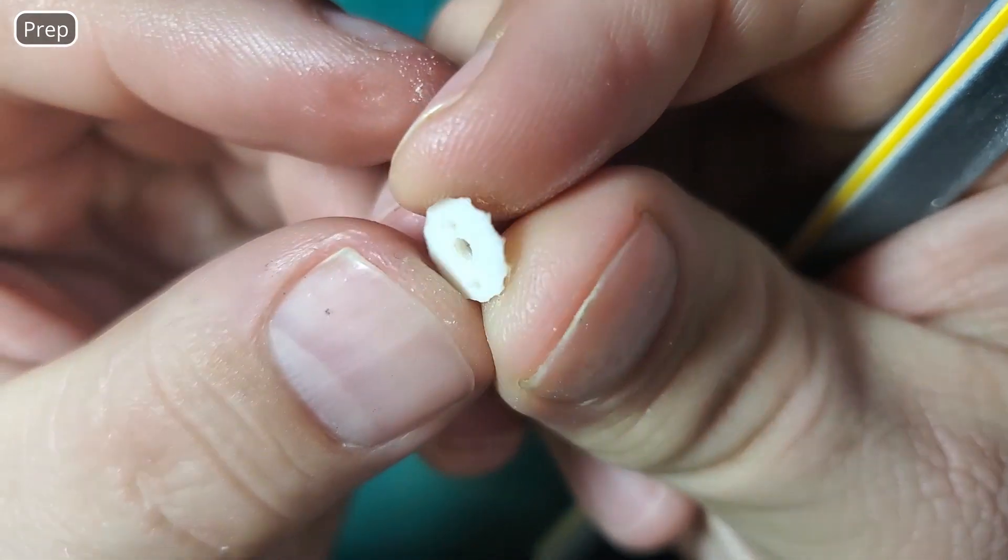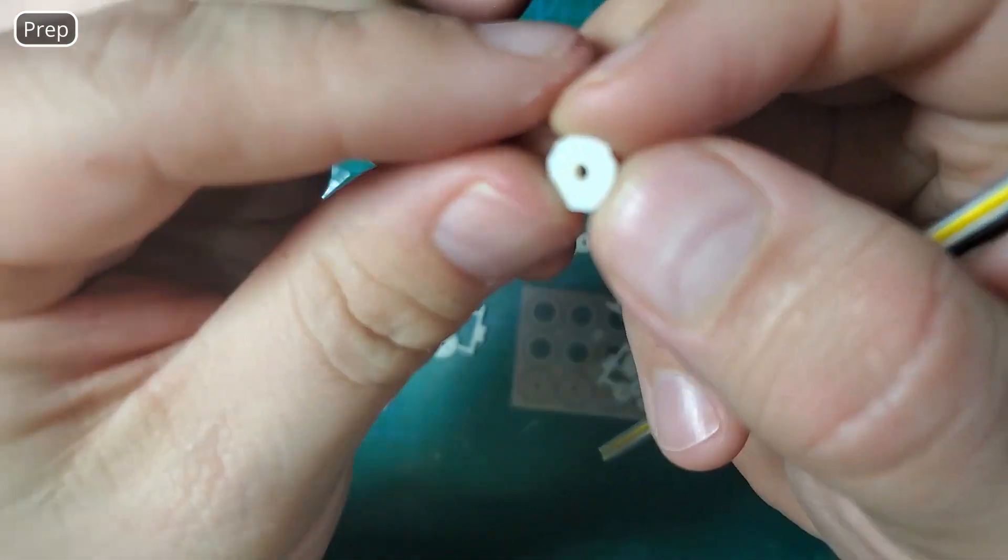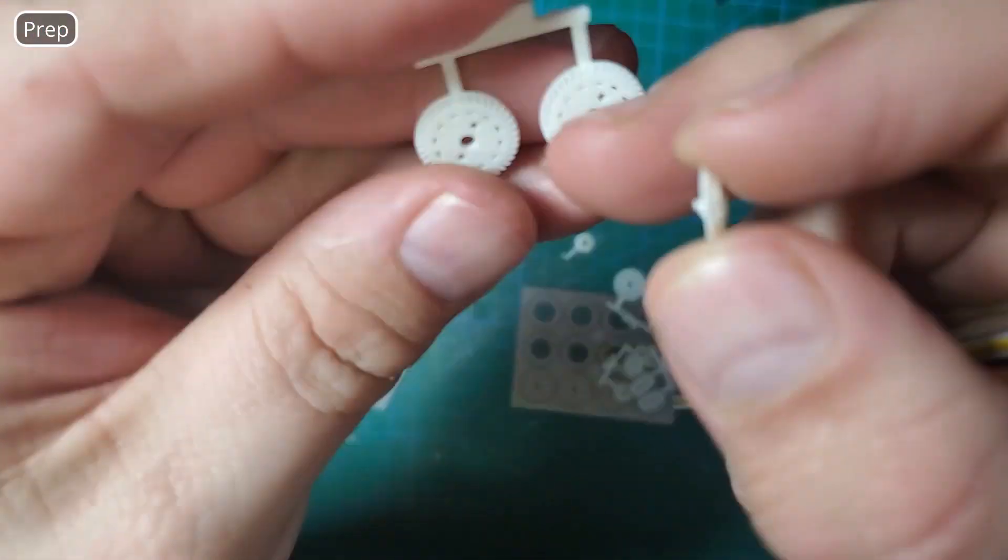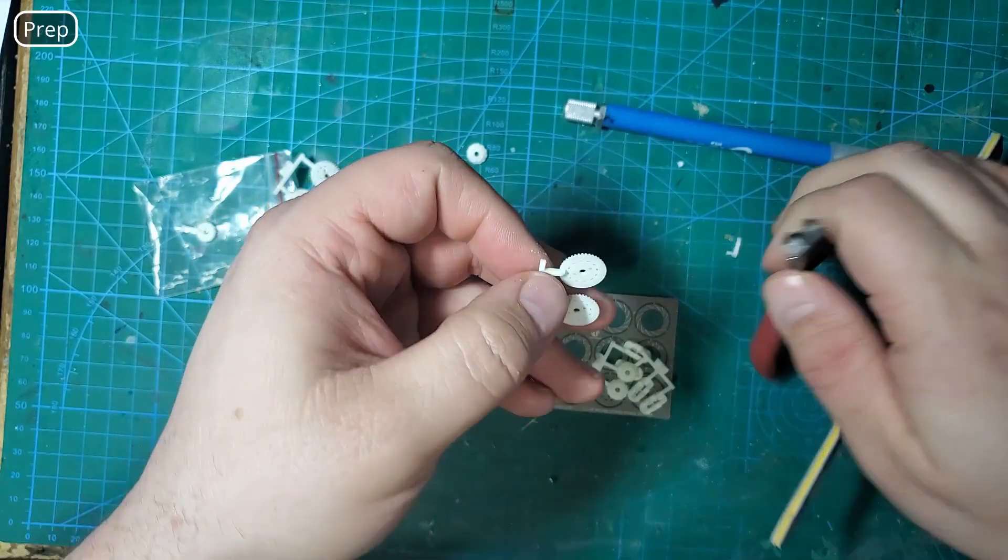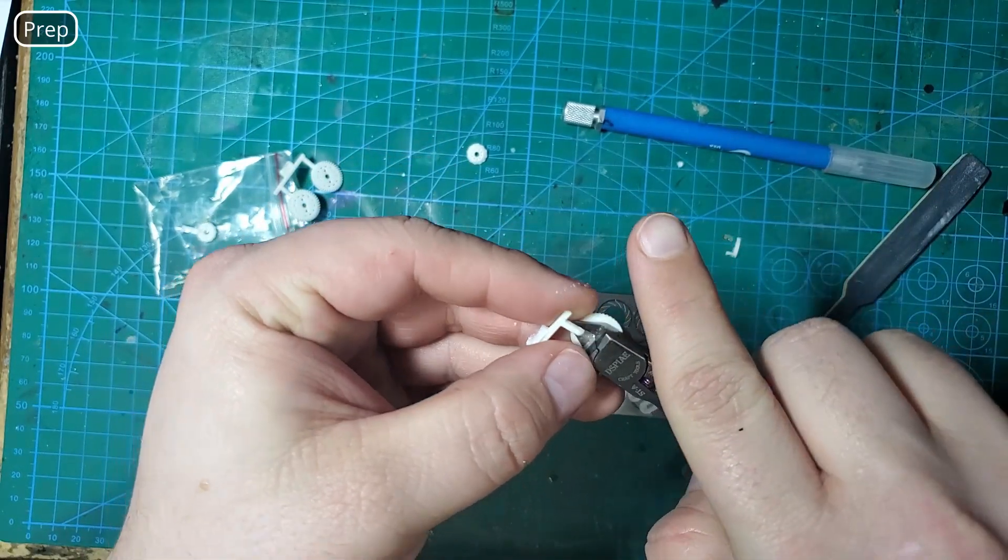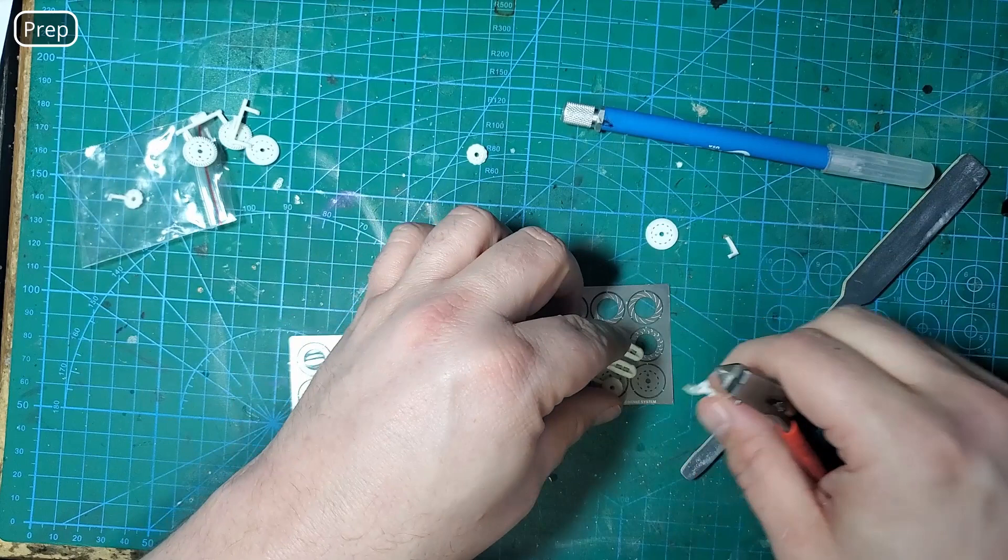You want to be very careful not to sand off those two little nubs as those are used for lining up the resin pieces and the various photo etch parts.